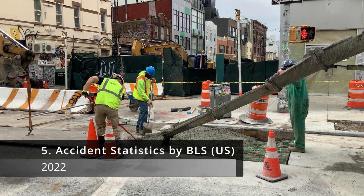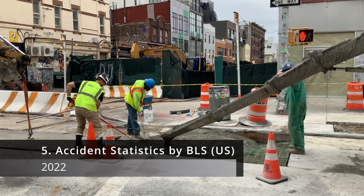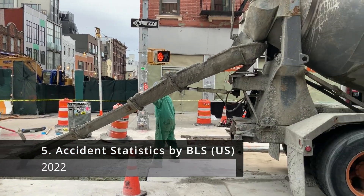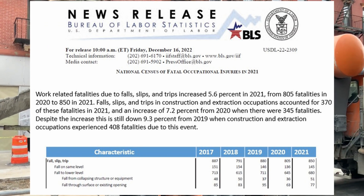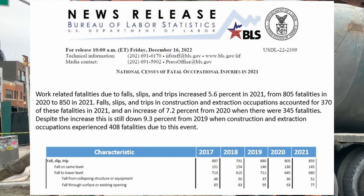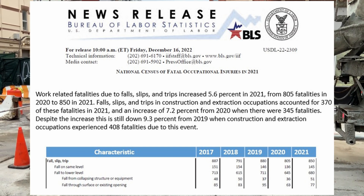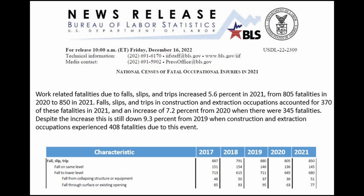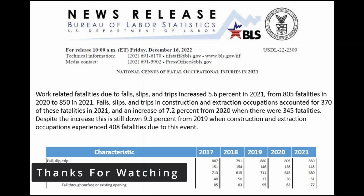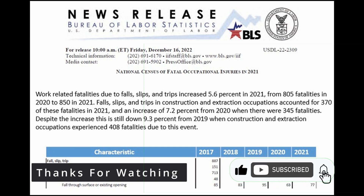Regarding incident statistics in the US, the governing authority is the BLS — Bureau of Labor Statistics. As per their news release, work-related fatalities due to falls, slips, and trips increased 5.6 percent in 2021, from 805 fatalities in 2020 to 850 in 2021. Falls, slips, and trips in construction and extraction occupations accounted for 370 of these fatalities in 2021, an increase of 7.2 percent from 2020, when there were 345 fatalities. Despite this increase, it is still down 9.3 percent from 2019 when construction and extraction occupations experienced 408 fatalities.